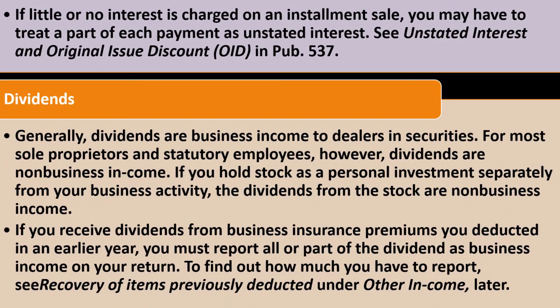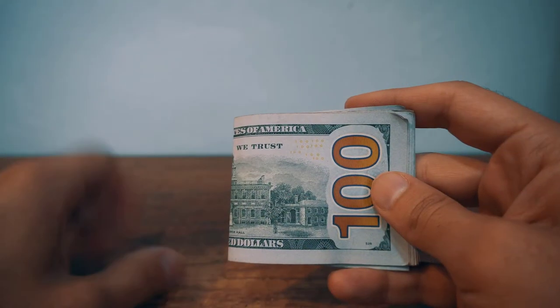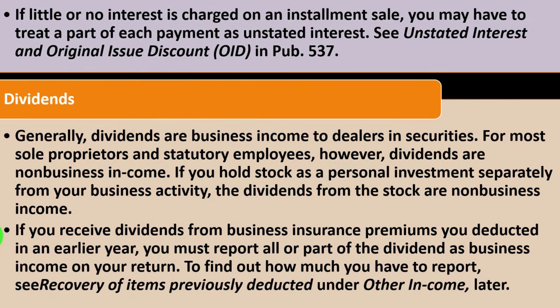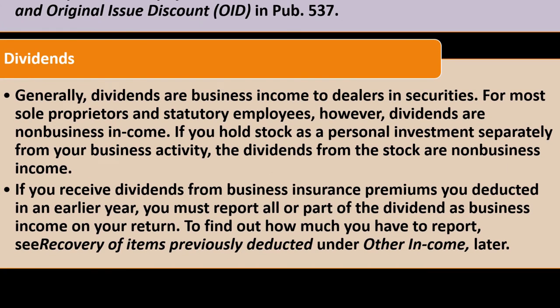Dividends: generally, dividends are business income to dealers in securities. For most sole proprietors and statutory employees, however, dividends are non-business income if you hold stock as a personal investment separately from your business activity — those dividends would be reported on Schedule B rather than Schedule C. If you receive dividends from business insurance premiums you deducted in an earlier year, you must report all or part of those dividends as business income. See 'recovery of items previously deducted' under other income for how much to report.